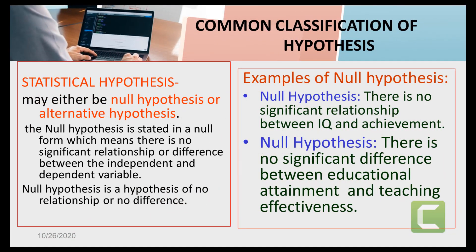Next, the classification of hypothesis is the statistical hypothesis. It may either be a null hypothesis or alternative hypothesis. The null hypothesis is stated in a null form, which means there is no significant relationship or difference between the independent and dependent variable. For example: there is no significant relationship between IQ and achievement. Another example: there is no significant difference between educational attainment and teaching effectiveness.